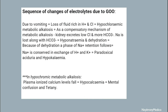Due to vomiting there is loss of fluid rich in potassium and chloride, leading to hypochloremic metabolic alkalosis. As a compensatory mechanism, the kidneys excrete low chloride and more bicarbonate. Sodium is also lost along with bicarbonate, causing hyponatremia and dehydration. Because of dehydration, sodium retention follows — sodium is conserved in exchange of potassium and hydrogen ions, resulting in paradoxical aciduria and hypokalemia in hypochloremic metabolic alkalosis. The plasma ionized calcium level falls, leading to hypocalcemia.